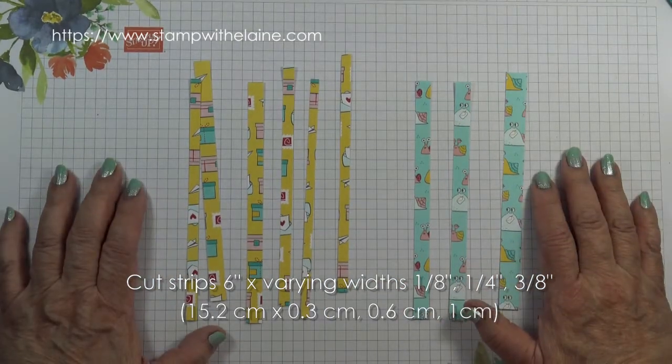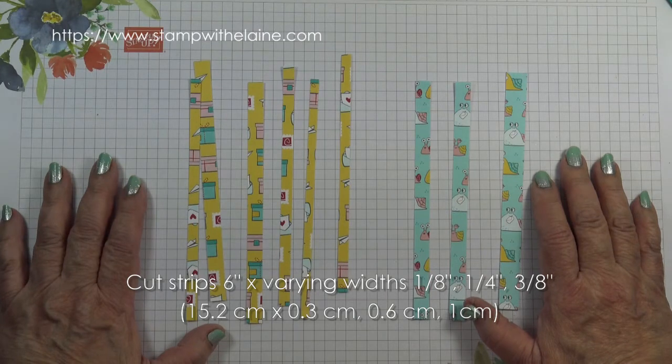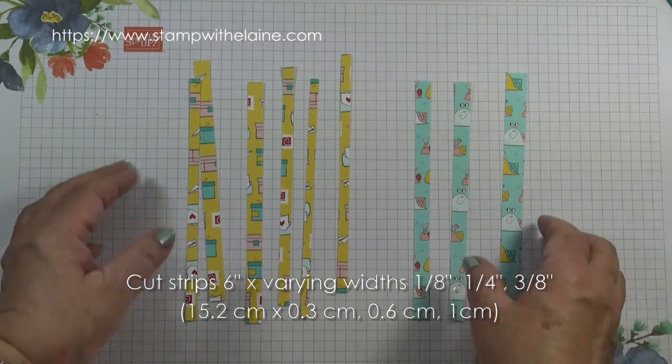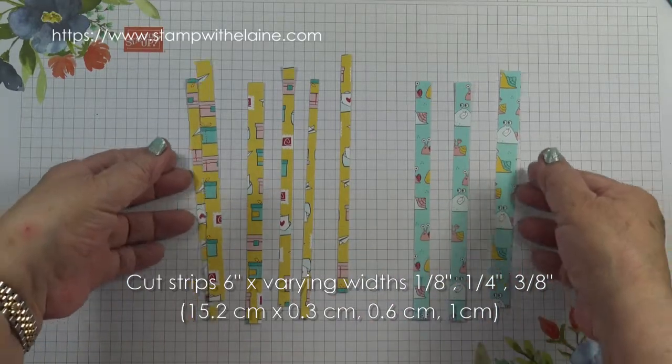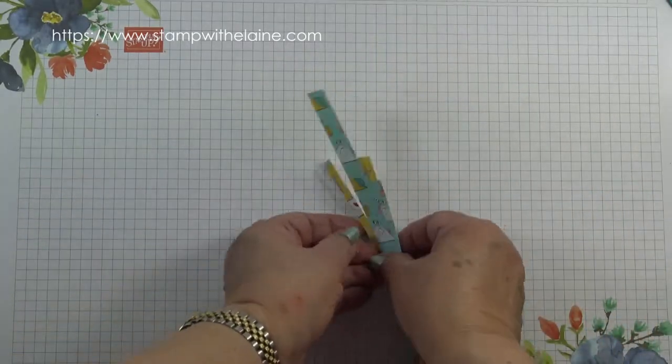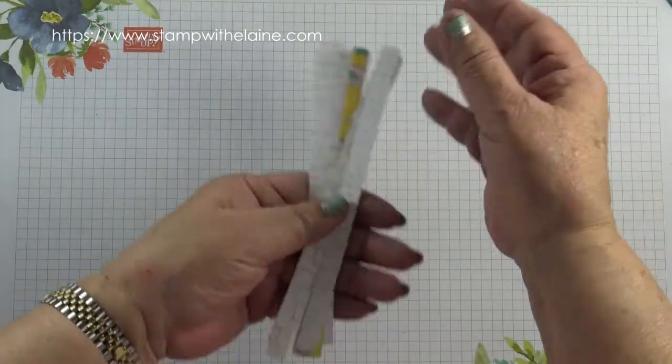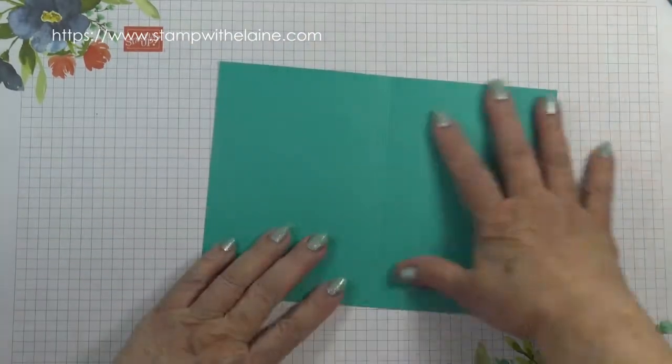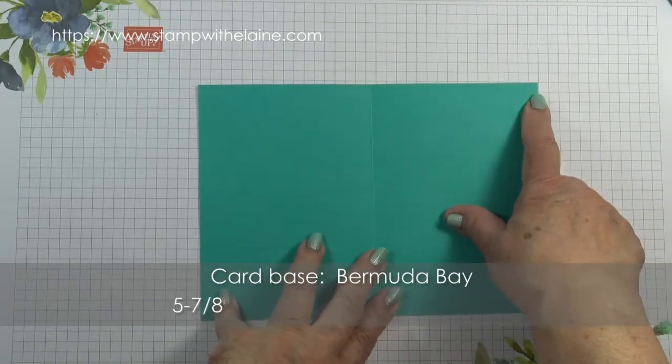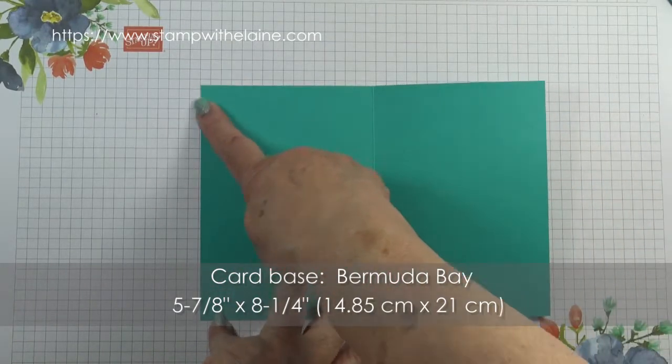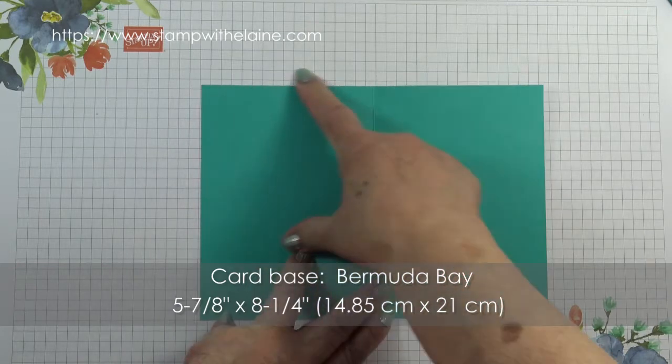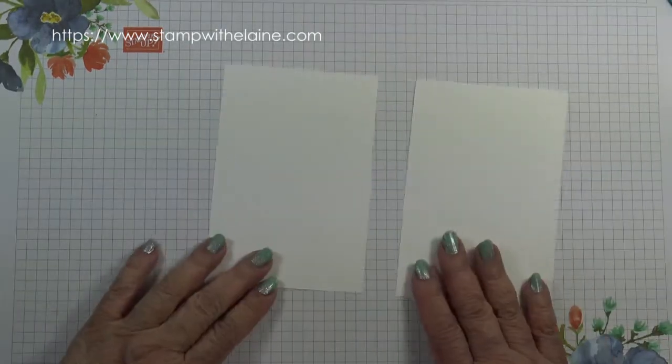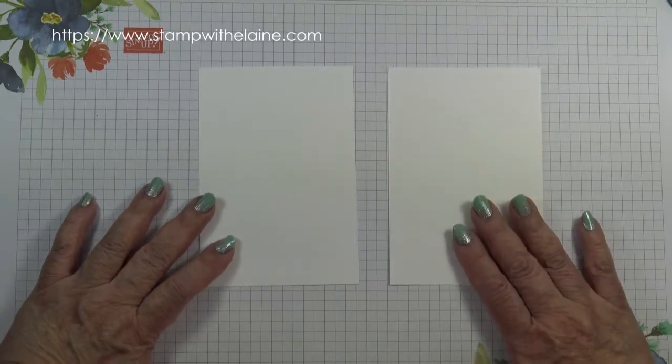In metric that's 0.3 centimeters, 0.6 centimeters or one centimeter. I skipped the half inch so you can use the front or the reverse to do your paper weaving. For your card base this is half an A4 sheet in Europe which measures five and seven eighths inches by eight and a quarter inches and folded in half. You need two pieces of whisper white cardstock.